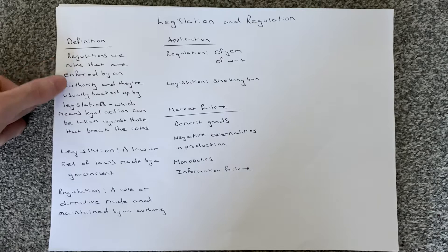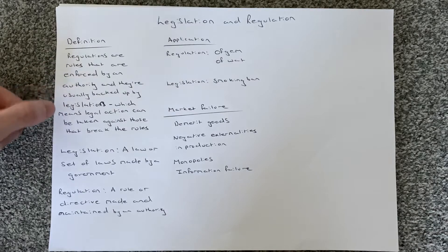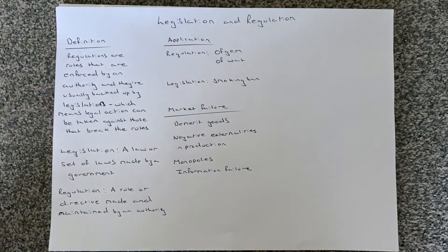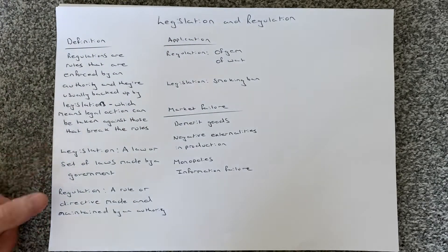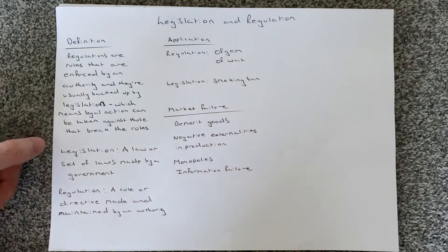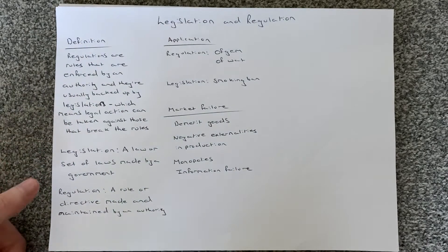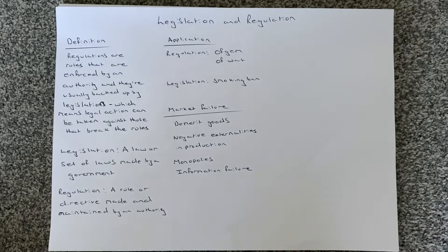What that means is that if these rules are broken, laws that have been set out will mean that legal action will be taken against those who break the rules. Regulation is the idea that there are rules that need to be maintained, and if those rules are broken, then legislation will clearly state that there is a consequence. To separate them: legislation is a law or set of laws made by a government, and regulation is a rule or directive made and maintained by an authority.